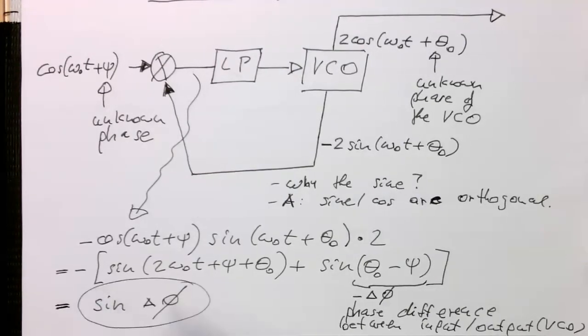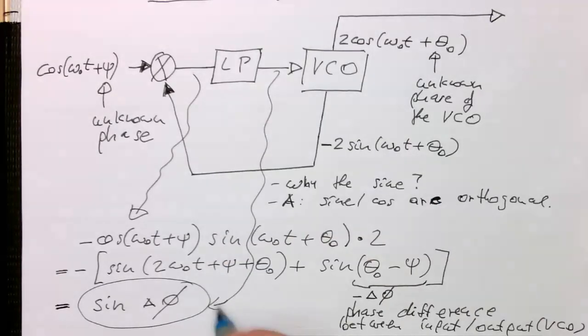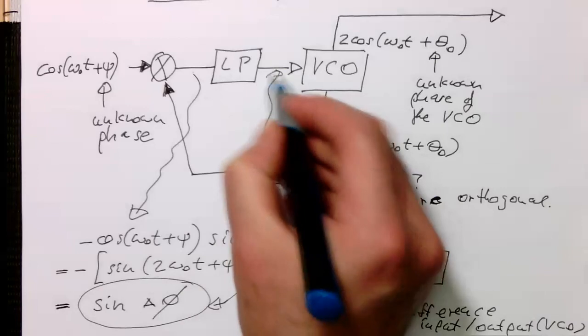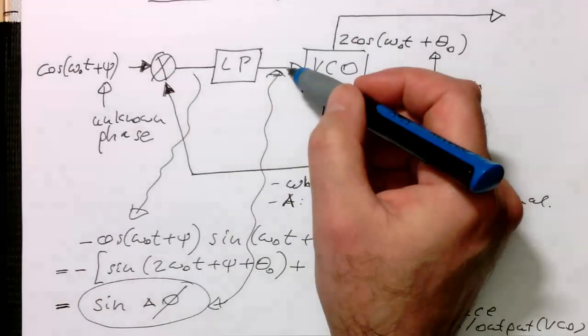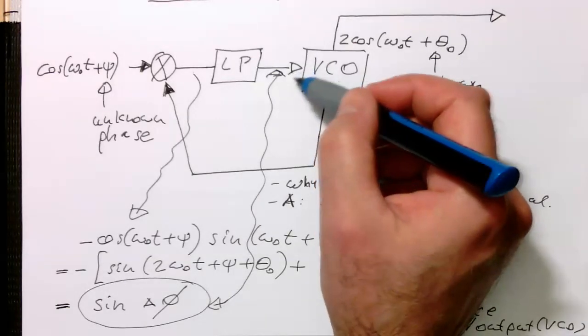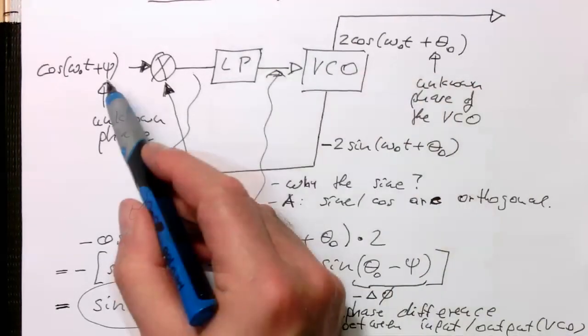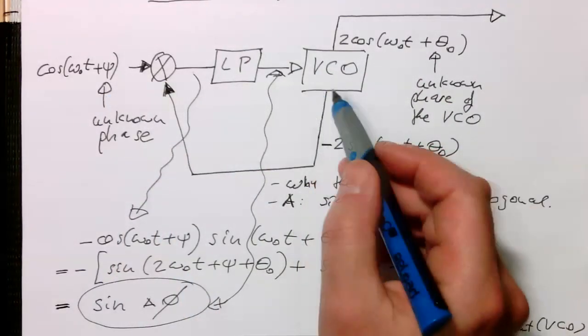So this term here will then show up here. So this means here at this point, after low pass filter, the phase difference between the input signal and the VCO frequency drives the VCO.